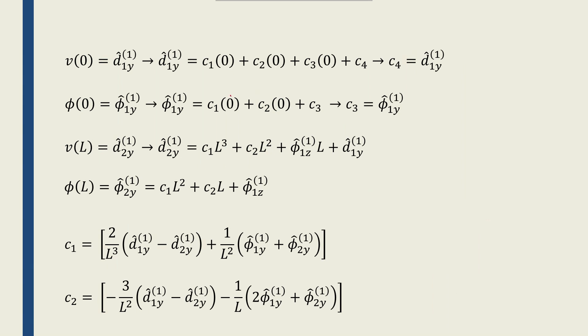Now, if I apply the boundary conditions, the first thing and the simplest thing is V(0), which is equal to D1Y1, which means C1 times 0, C2 times 0, and C3 times 0 becomes 0, so C4 becomes D1Y1. So I found one of the coefficients. Then I have phi(0), which is equal to phi1Y1, which from the equation leads to C1 times 0 plus C2 times 0 plus C3, so C3 becomes phi1Y1.